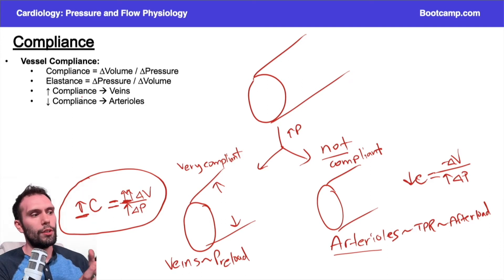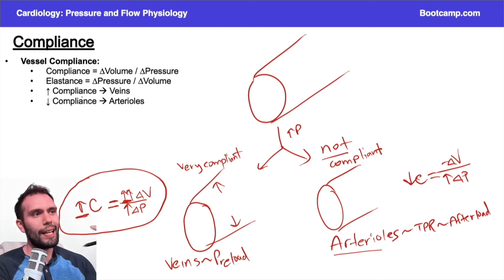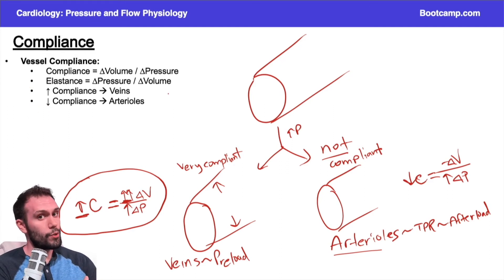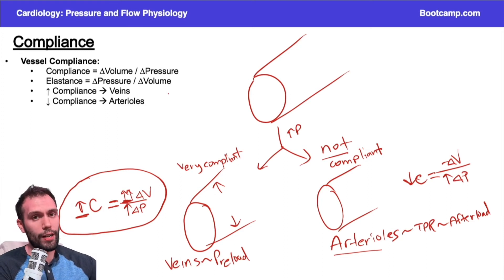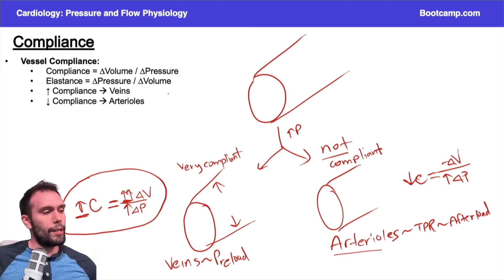In general, smooth muscle relaxation will be responsible for increasing compliance, particularly in the veins. The veins are going to have much higher compliance overall, and smooth muscle contraction will be responsible for decreasing compliance. Remember, calcium is associated with smooth muscle contraction — elevations in calcium — and cGMP and decreases in calcium are associated with dilation.